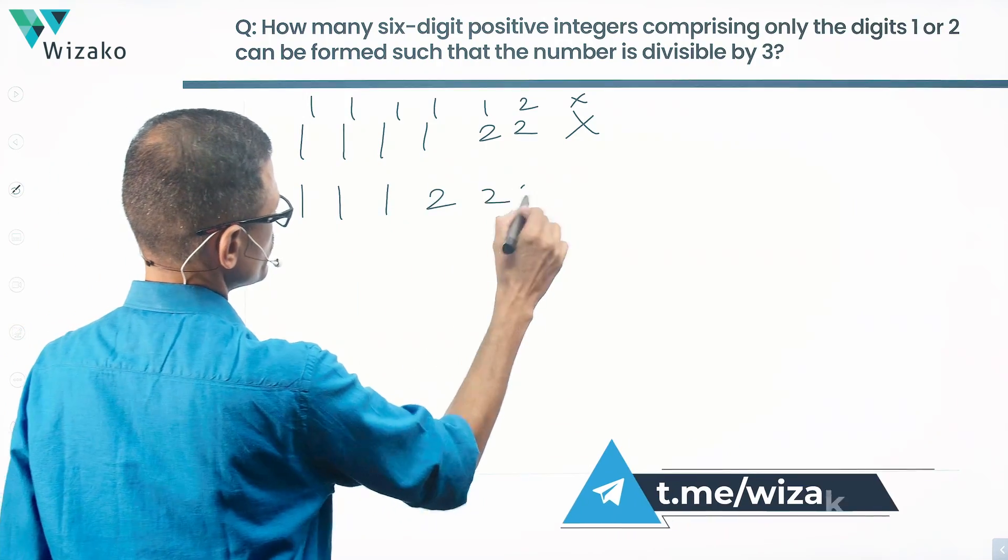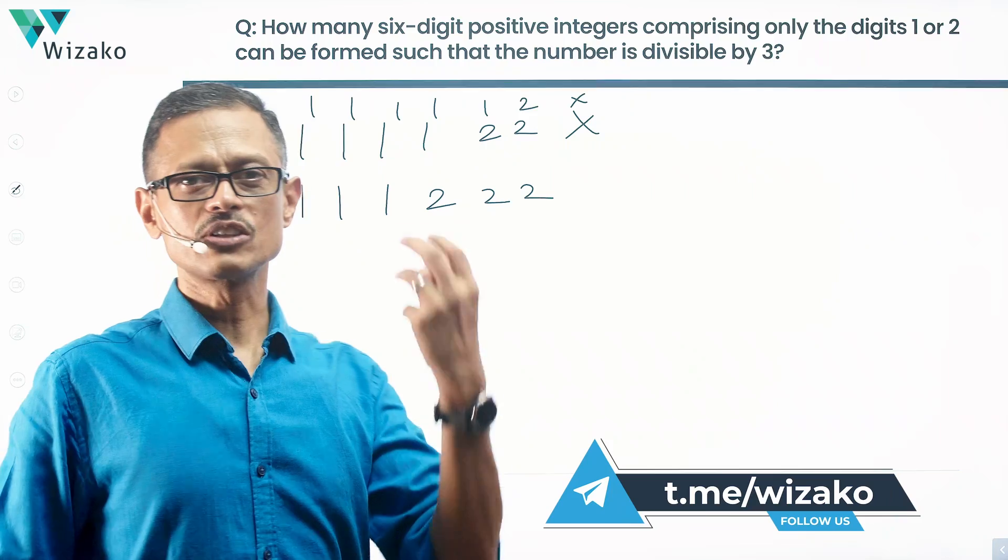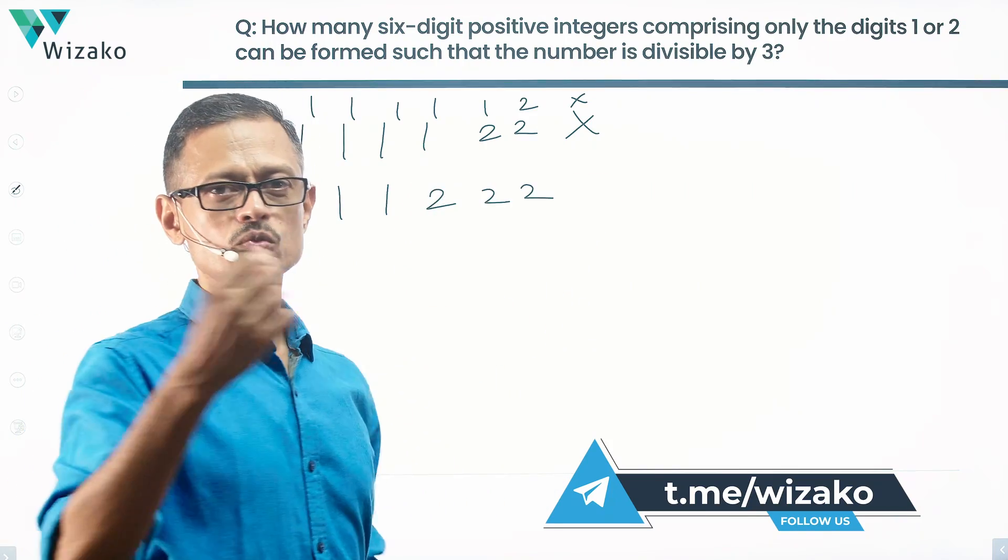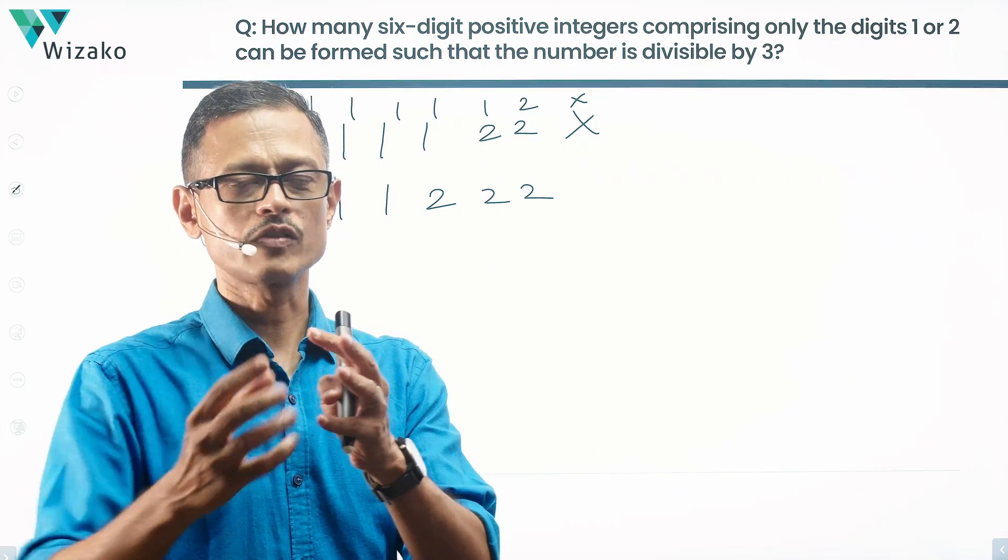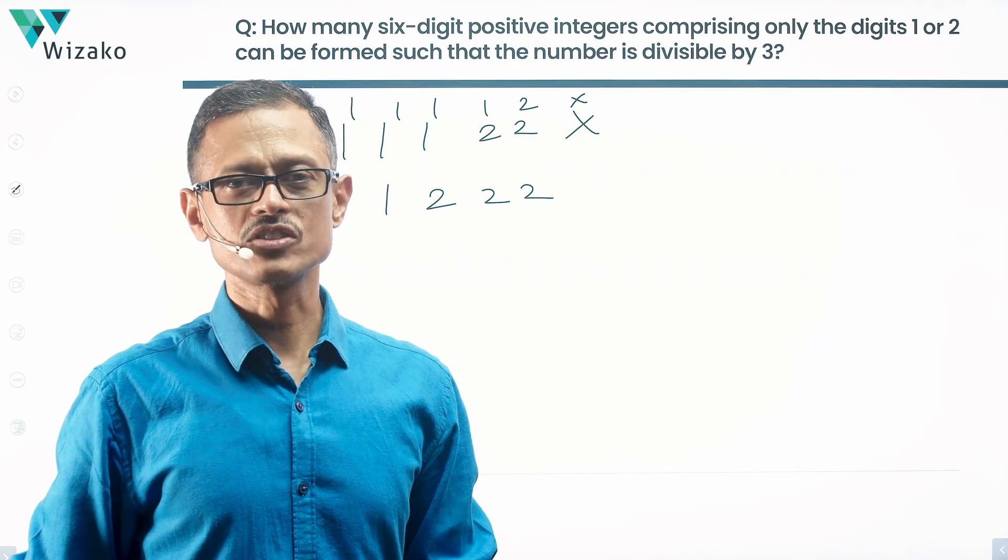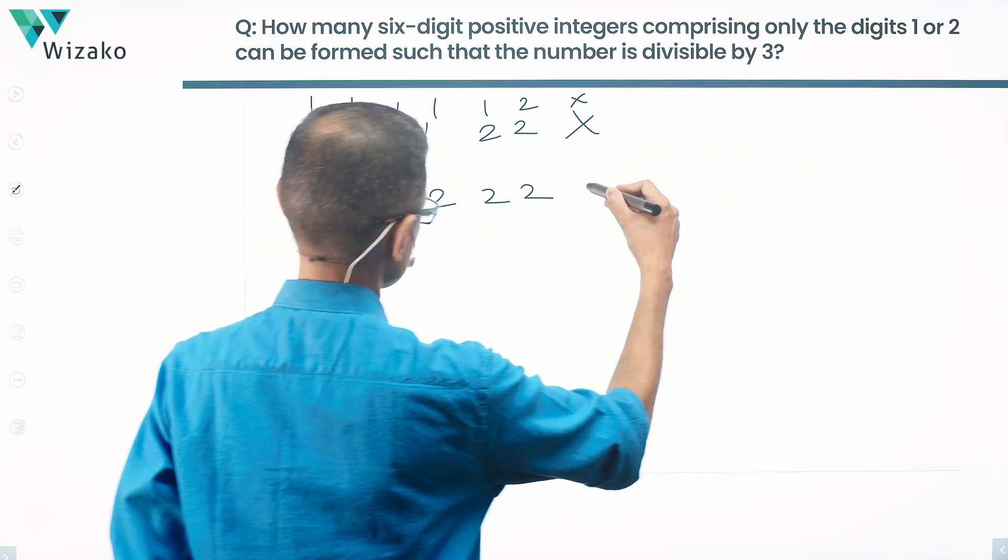1, 1, 1, 2, 2, 2. Will this work? It will. For the simple reason, add it up and say 6 plus 3 is equal to 9. 9 is divisible by 3. What you have done is, we've essentially converted 3 of these 1s into 2s. So we've added 3 more to it. Initially it was a 6. We're adding 3 more. Any multiple of 3 to 6, it's going to become a number that is divisible by 3. So this will pass the muster.